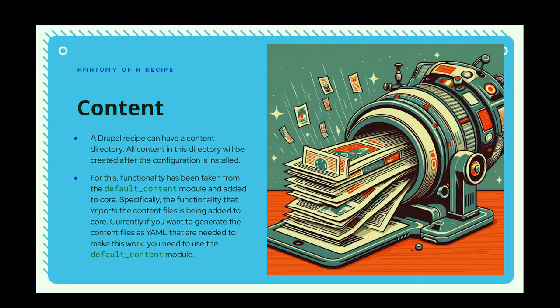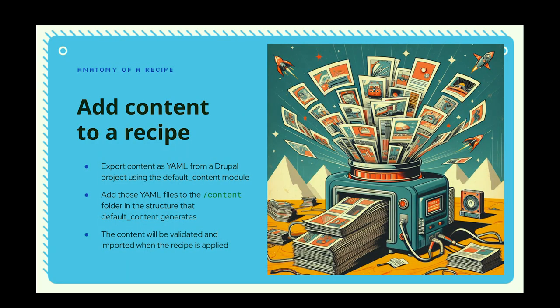There's also the ability to provide content with a recipe — that comes from code brought into core from a contrib project called Default Content. The idea is that you provide a YAML file for each item of content you want imported, and when the recipe is applied, that content gets brought into your site. In terms of generating the YAML, the best practice is still to use the Default Content module. It'll do the export and create subfolders for each entity type, and you put that into the content directory within your recipe. When the recipe is applied, it validates that content and imports it into the site.